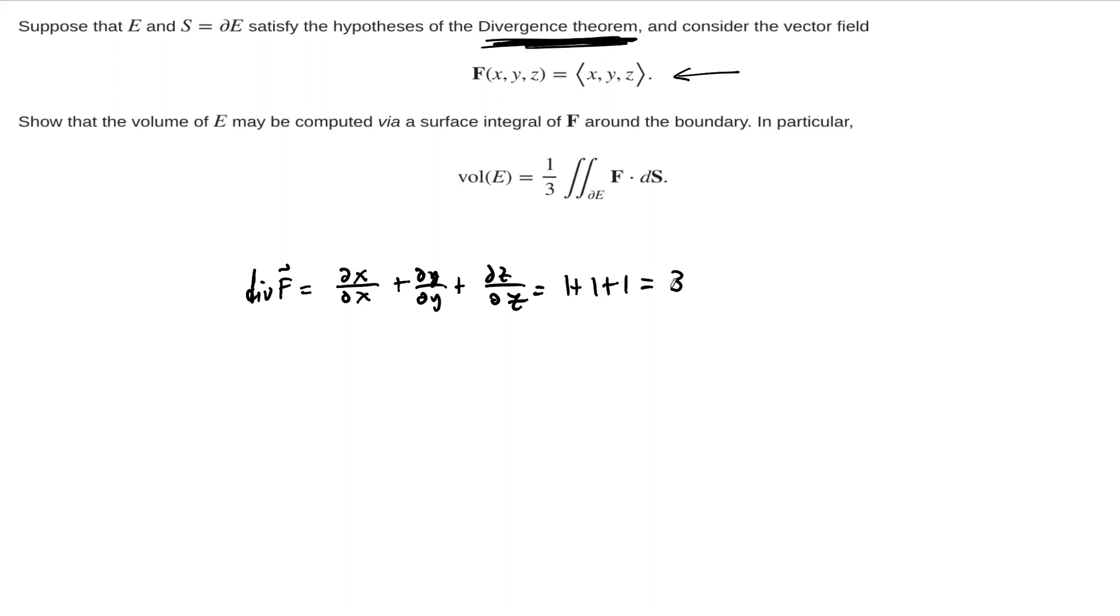And so this adds up to three. And so we can take the triple integral over our solid region, whatever that solid region is, of the divergence of this vector field f and integrate it up. And this ends up being the triple integral over E of 3dV. Of course, the three can come out, and this triple integral is just the volume. So this is three times the volume of E.